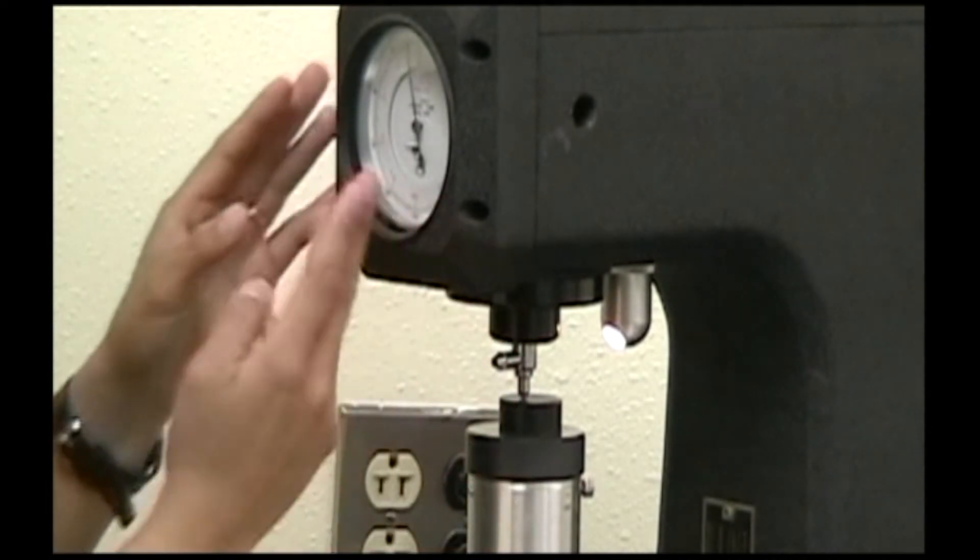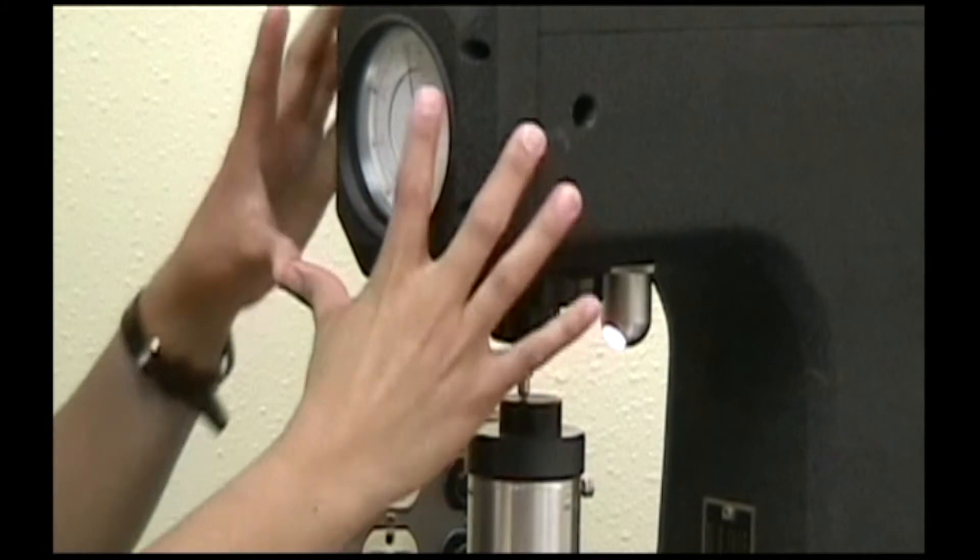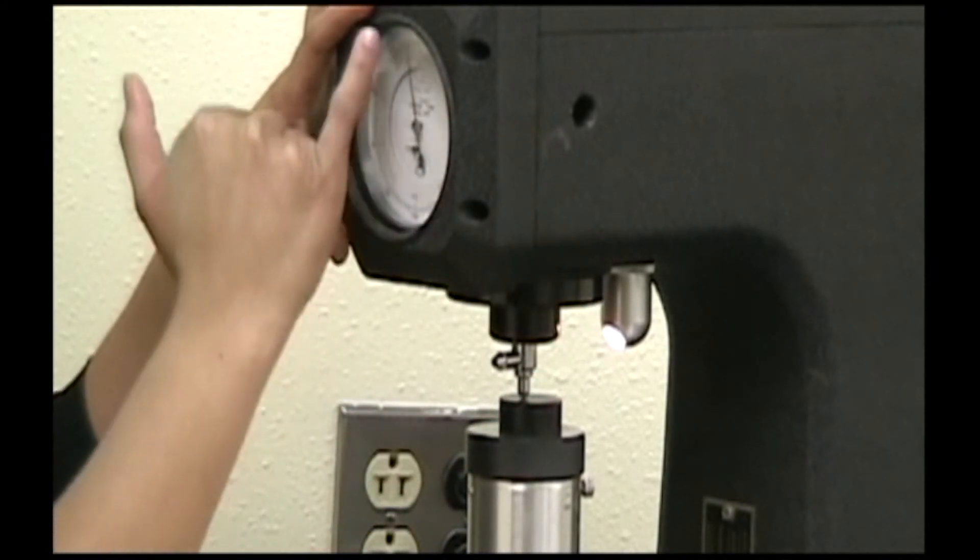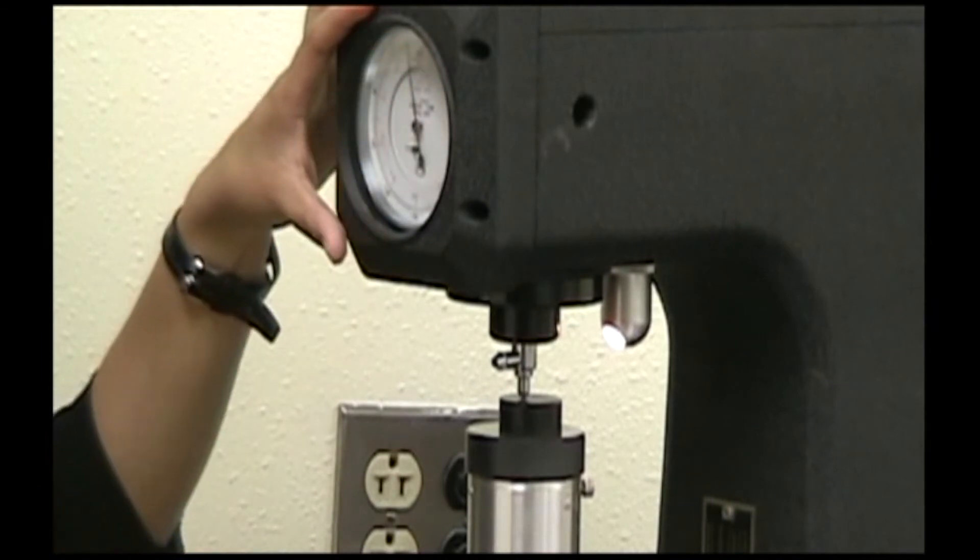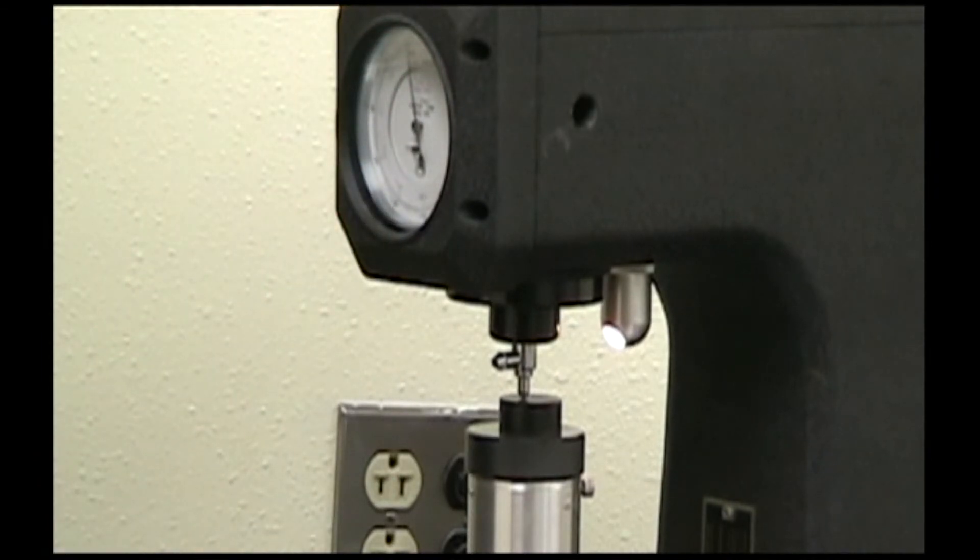And then you reposition the dial so that the needle is pointing at set or RB30 and RC0. And you do that by adjusting here.